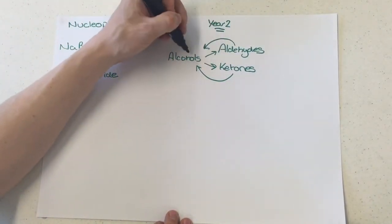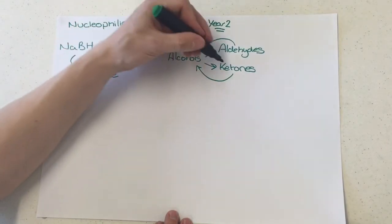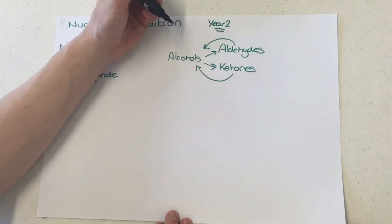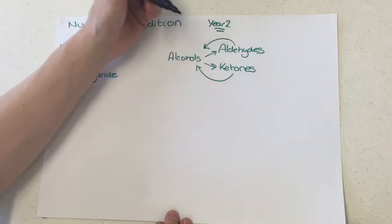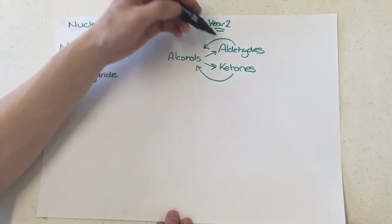Now, of course, you can only get an aldehyde from a primary alcohol, and you can only get a ketone from a secondary alcohol. Remember, tertiary alcohols don't undergo oxidations to become a carbonyl-containing compound like that. They can form esters, but that's a different topic.